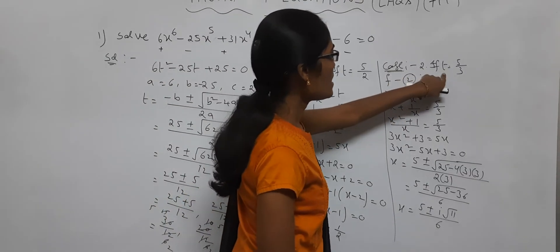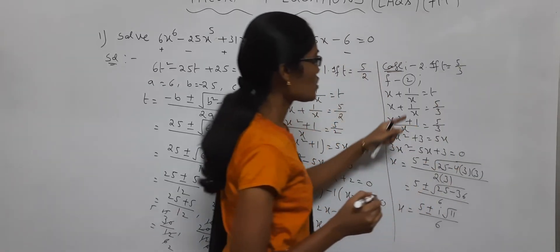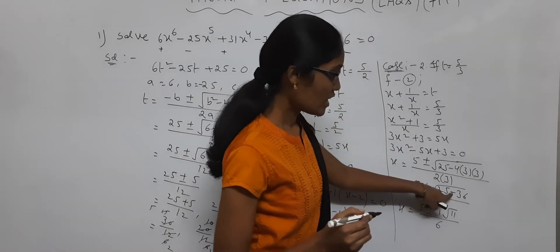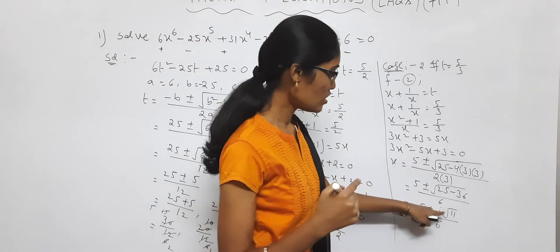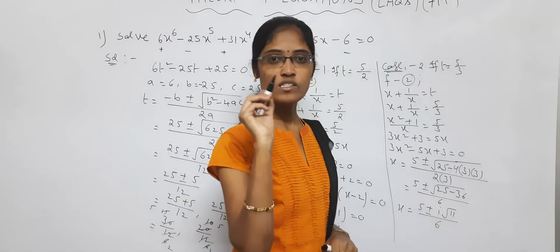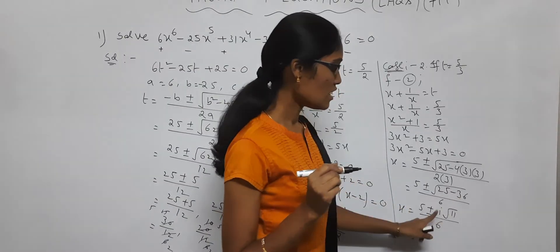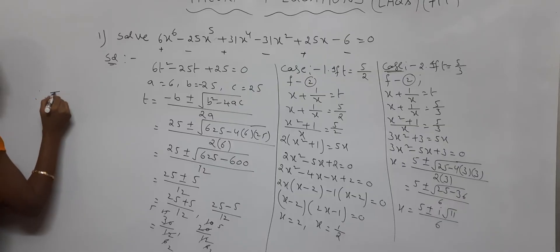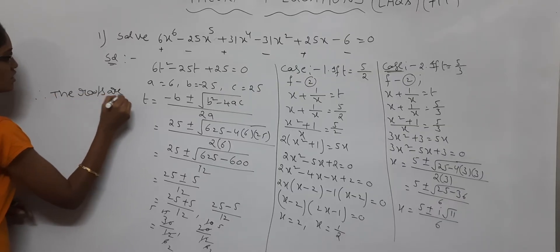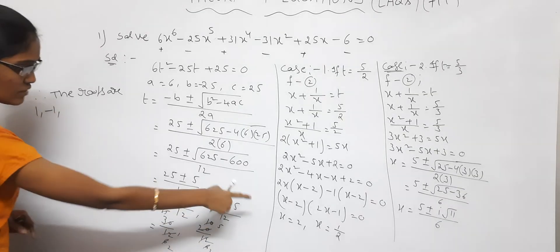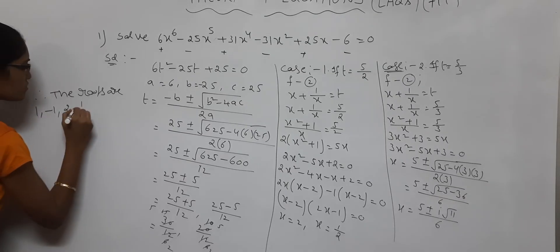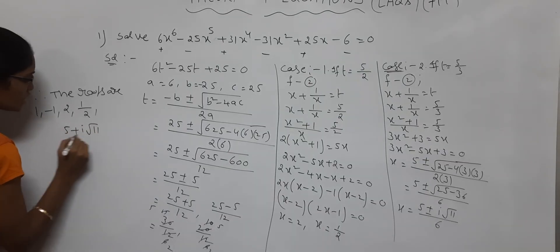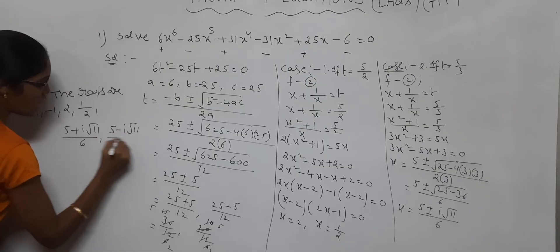Next, case 2: if t equals 5 by 3. Substituting in x plus 1 by x equals 5 by 3. Here 25 minus 36 gives minus 11 under the root. Since the value under the root is negative, we get i root 11 — because i square equals minus 1. So we get complex roots 5 plus i root 11 by 6 and 5 minus i root 11 by 6.